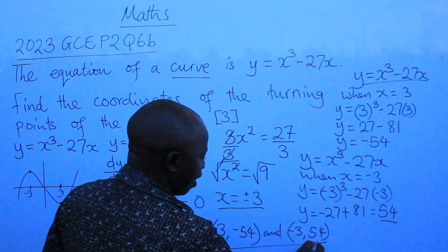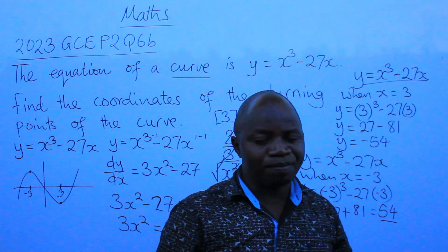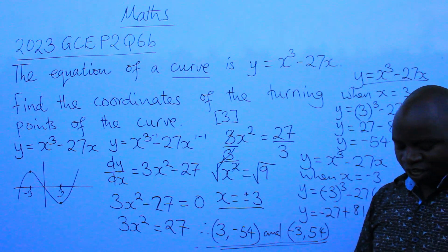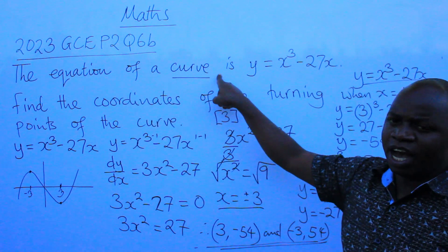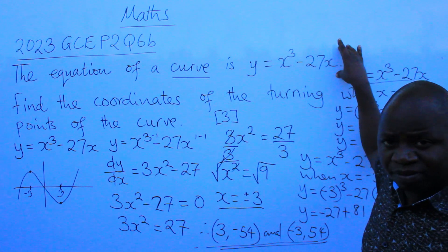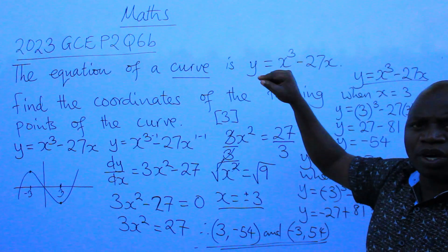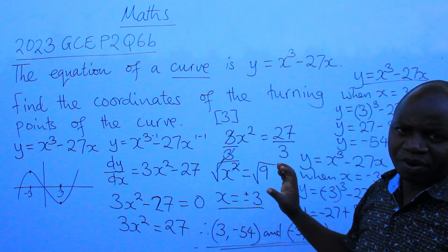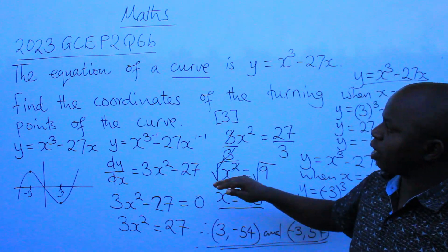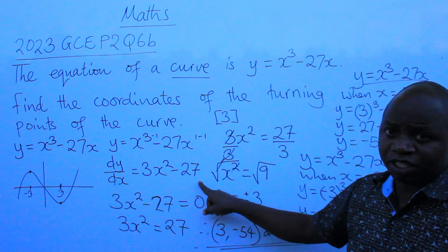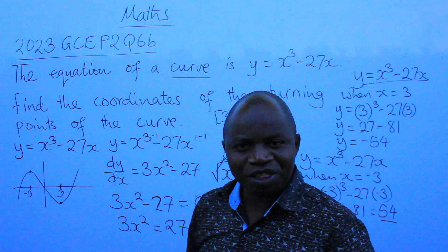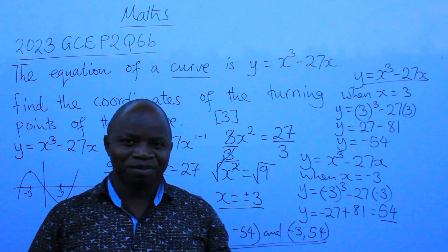In short, whenever you are given a curve and asked to find the coordinates of the turning points: differentiate the curve first, equate dy/dx to 0 to find the values of x, then substitute those x values back into the original equation — not the differentiated one — to find the values of y. Then you are done. I hope this is clear. Bye-bye.